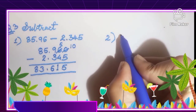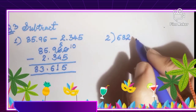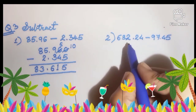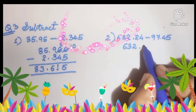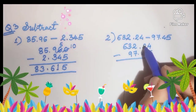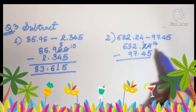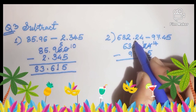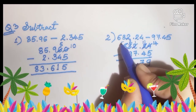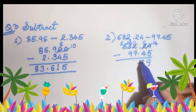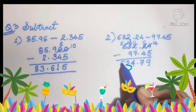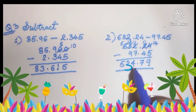Question number 2: 632.24 minus 97.45. Write with the same place values aligned. Borrow: 14 minus 5 is 9. Borrow again: 11 minus 4 is 7. Borrow again: 11 minus 7 is 4. And 12 minus 9 is 3. 5 stays as it is. So the answer is 534.79.